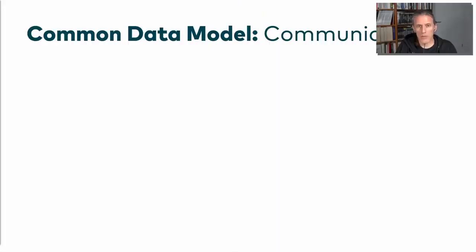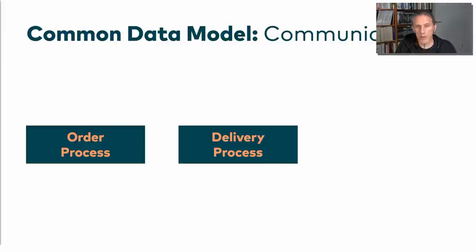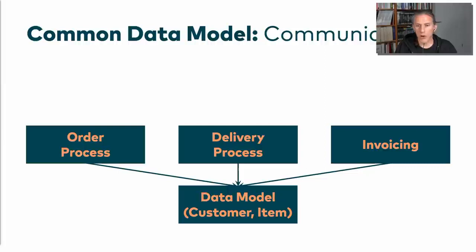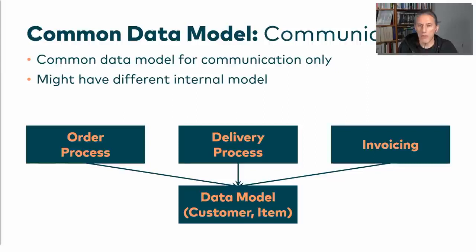Let's start off with some microservices. We have one for order processing, another for delivery, and one that writes invoices. It seems to make sense to come up with a common data model for common business objects such as a customer or an item. You would use them for communication only, because in the database there will be different databases for each microservice. We can also have a different internal model in each microservice.